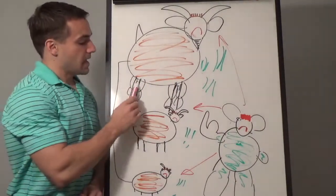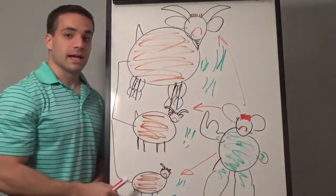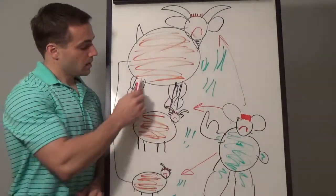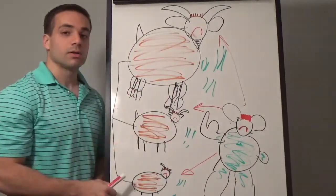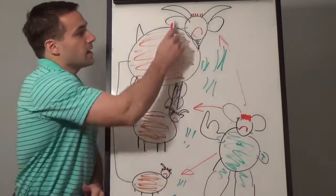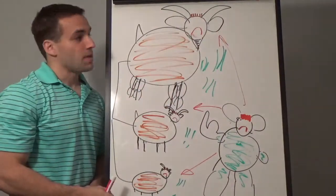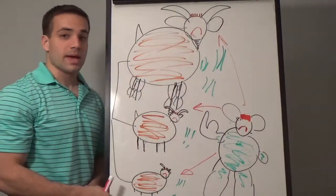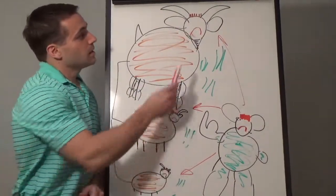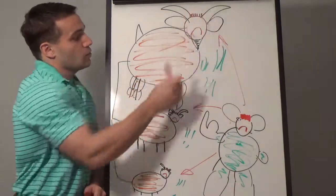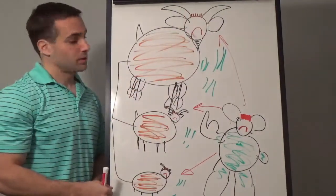He has four legs. He is tall. He has two ears. The ears are big. He has two big horns.